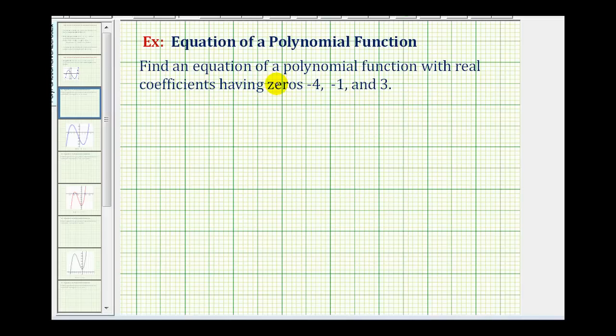We want to find a possible equation for a polynomial function with real coefficients having zeros negative 4, negative 1, and positive 3. Let's review what we know about the zeros of a polynomial function.